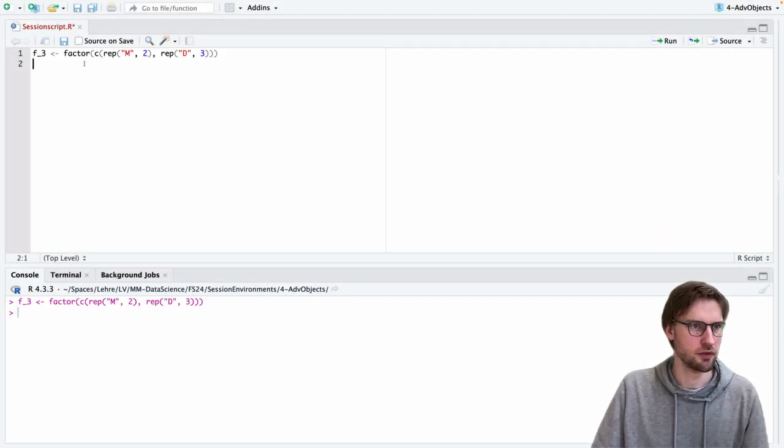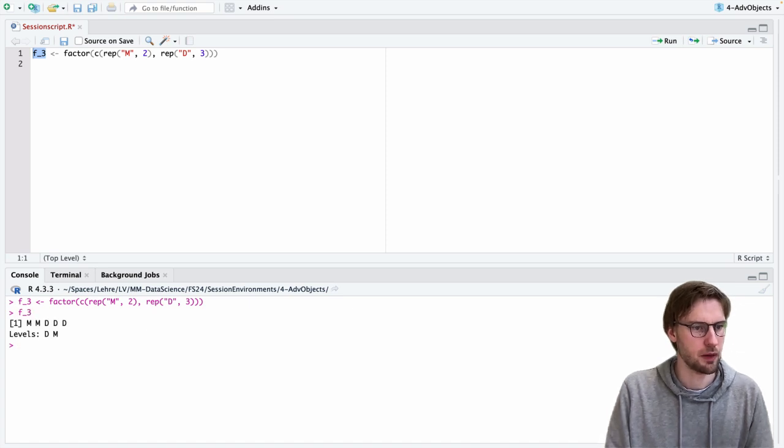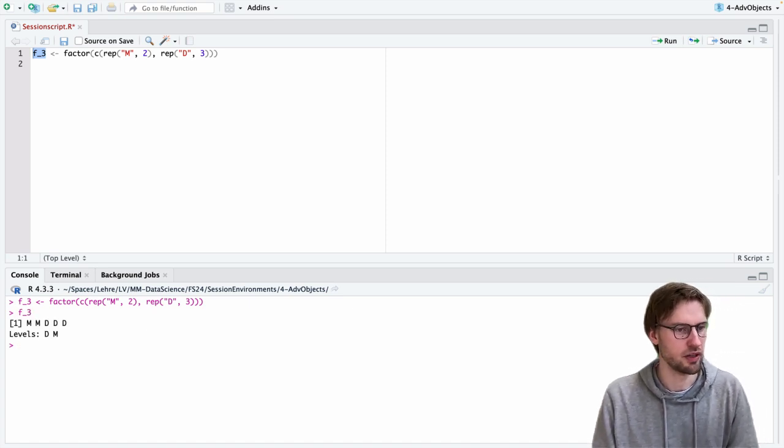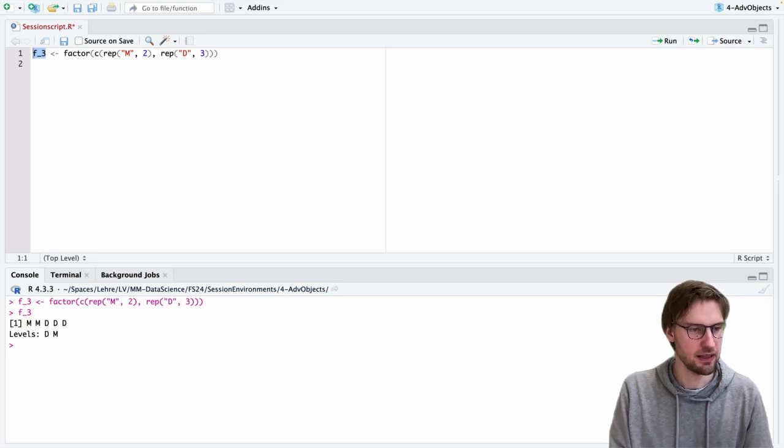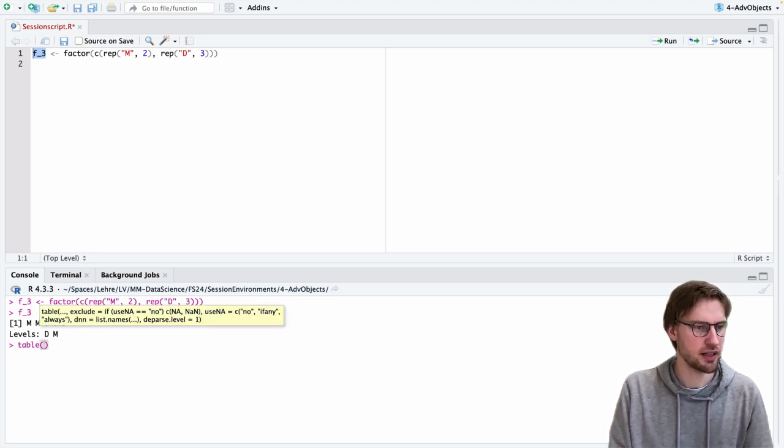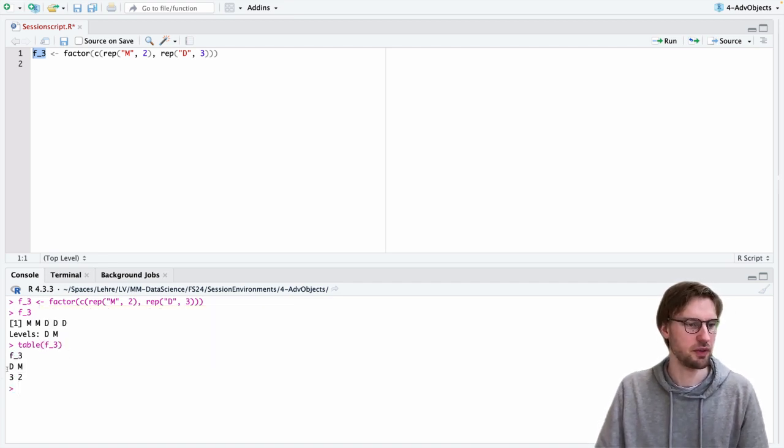So let's try this out here. We have a factor F3. We see it contains two kinds of elements, m and d, two times m, three times d. We can use the function table to get a frequency table of this factor. Here we see the element d shows up three times, the element m shows up two times.